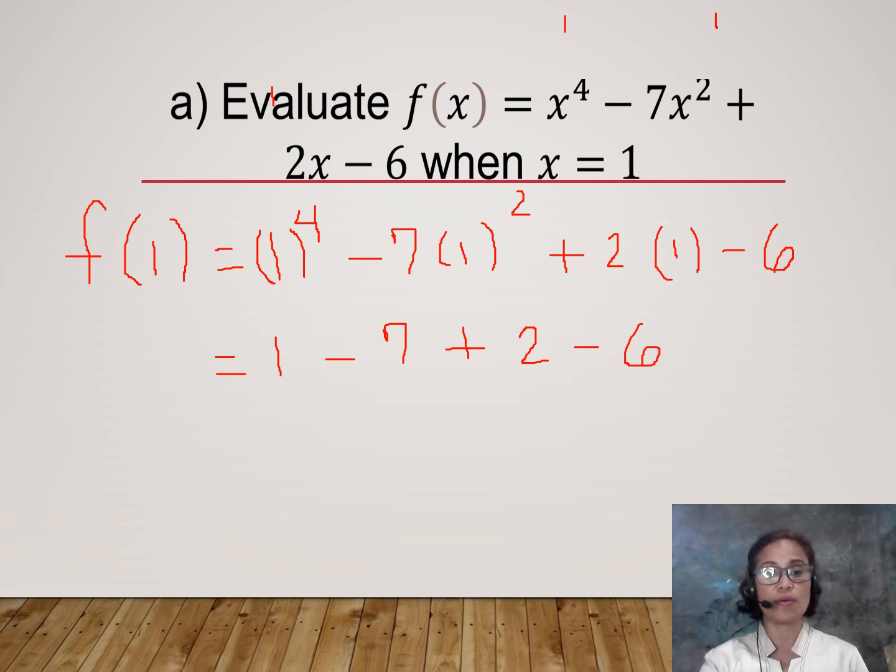So combining all of this, you get 1 plus 2 is 3, negative 7 and negative 6 is negative 13. So we have negative 10. The value of f(1) is negative 10. Let's box the final answer.